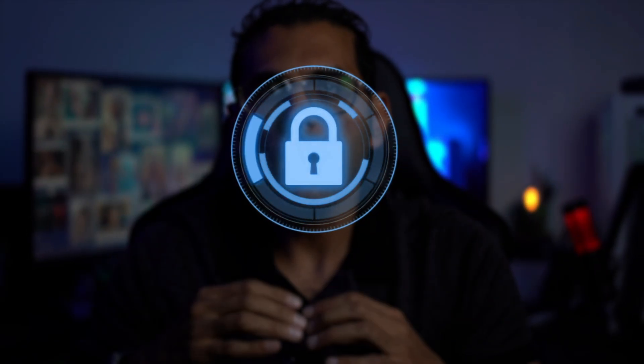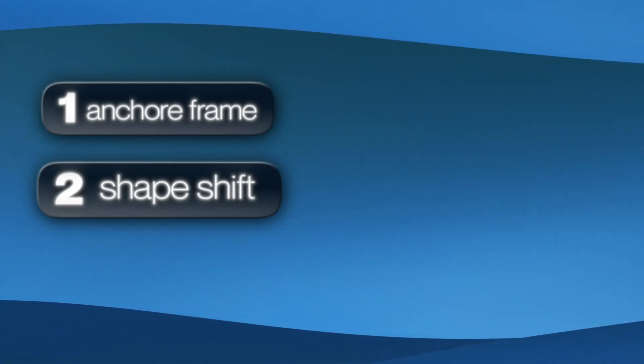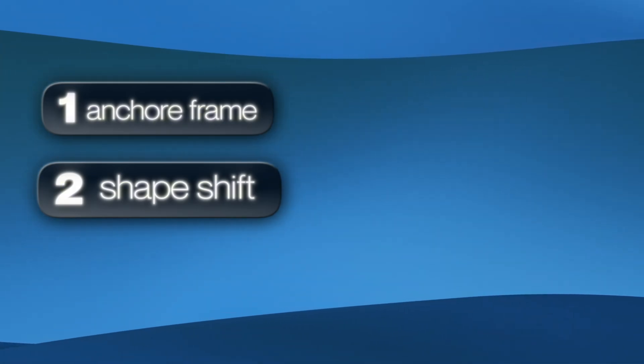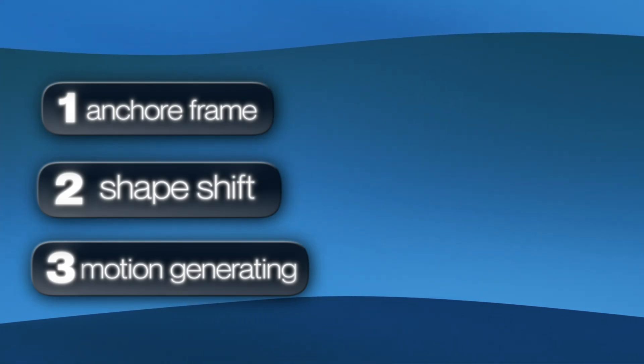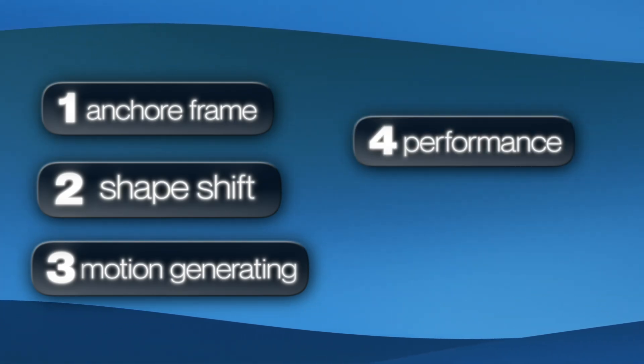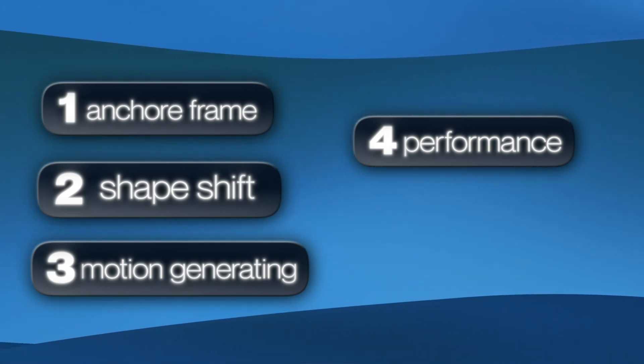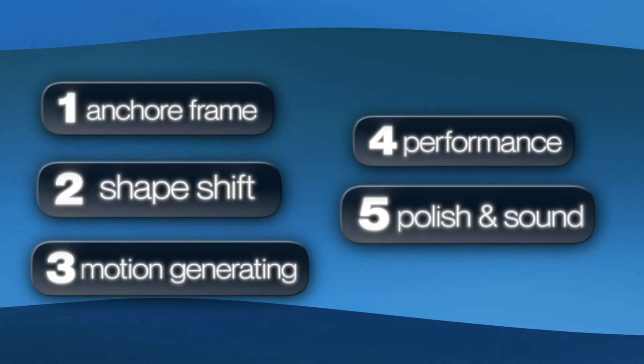So we've locked in all the individual pieces of the puzzle. Now let's put it all together and map out that complete, repeatable workflow you can use to make your own jaw-dropping transformations. Here it is — the whole thing in five simple steps. Step one, the anchor: exporting that all-important last frame. Step two, the shape shift: using Nano Banana to create your new character. Step three, the motion: generating the transition with Kling AI. Step four, the performance: using video AI to bring it to life. And finally, step five, the polish: adding all that amazing custom sound and voice with a tool like Eleven Labs.